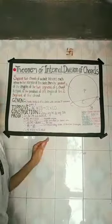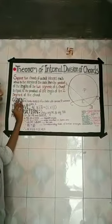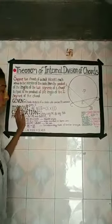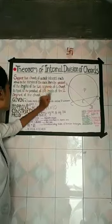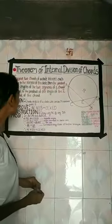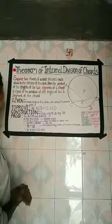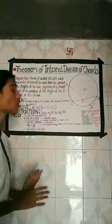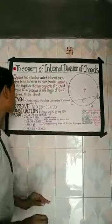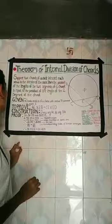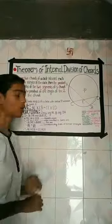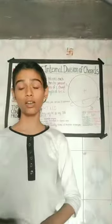In the textbook language, the definition is given — you can call it an explanation. Suppose two chords of a circle intersect each other in the interior of the circle, then the product of the lengths of the two segments of one chord is equal to the product of the lengths of the two segments of the other chord.